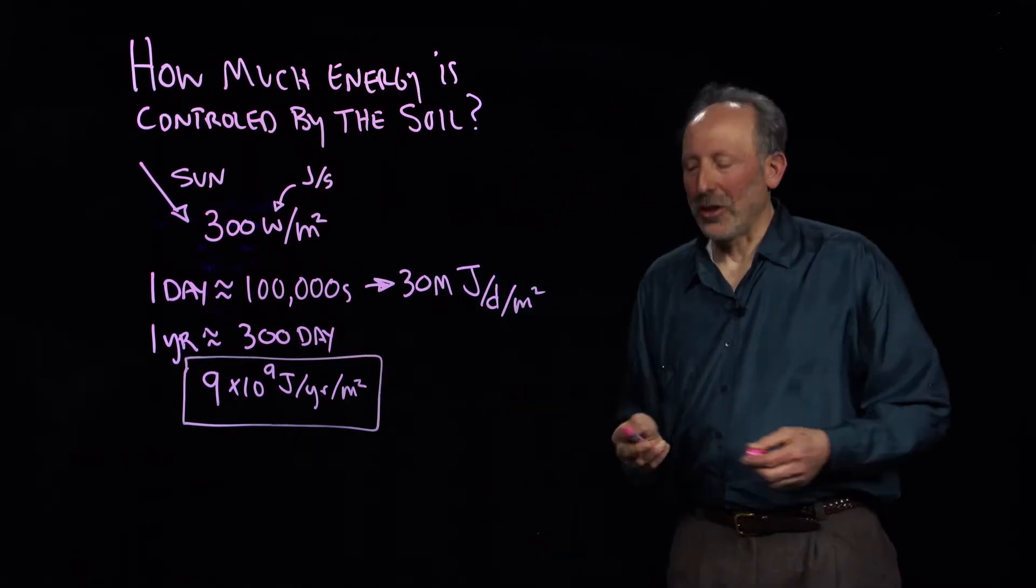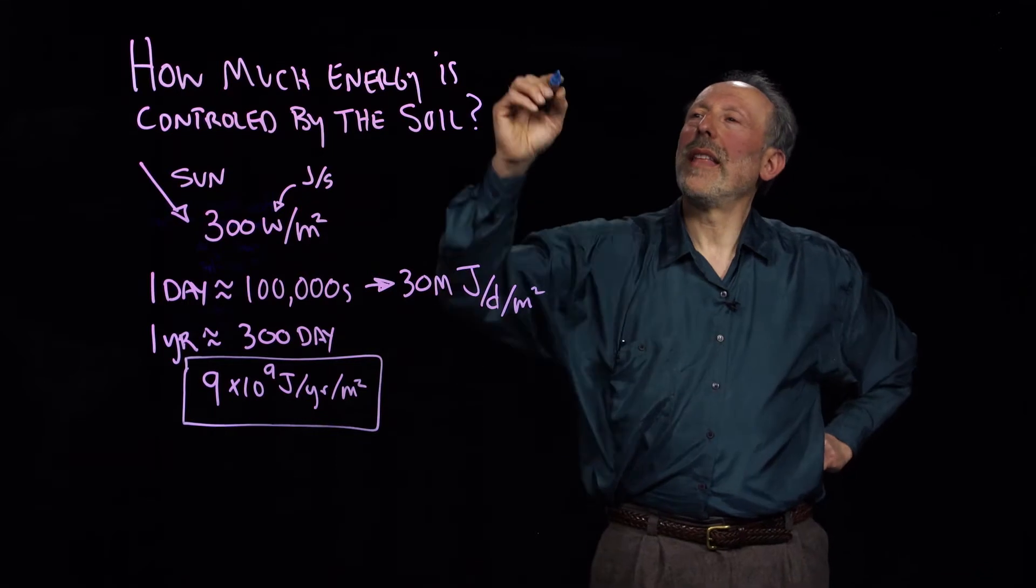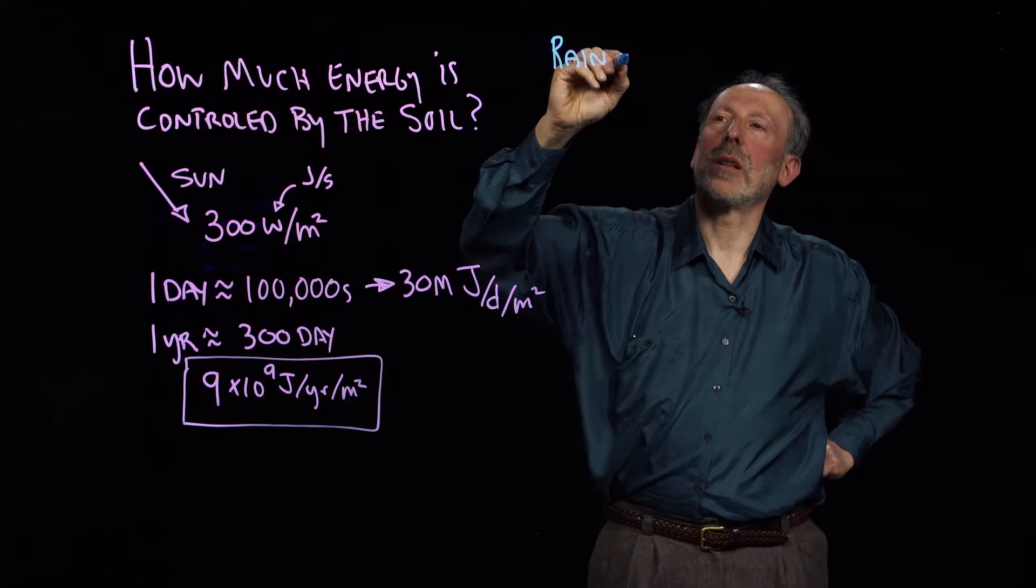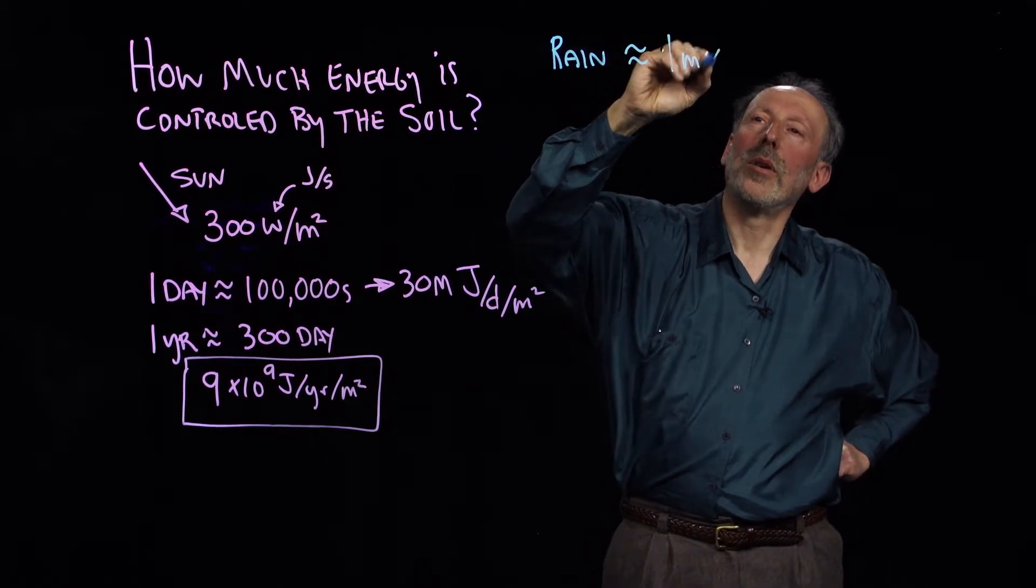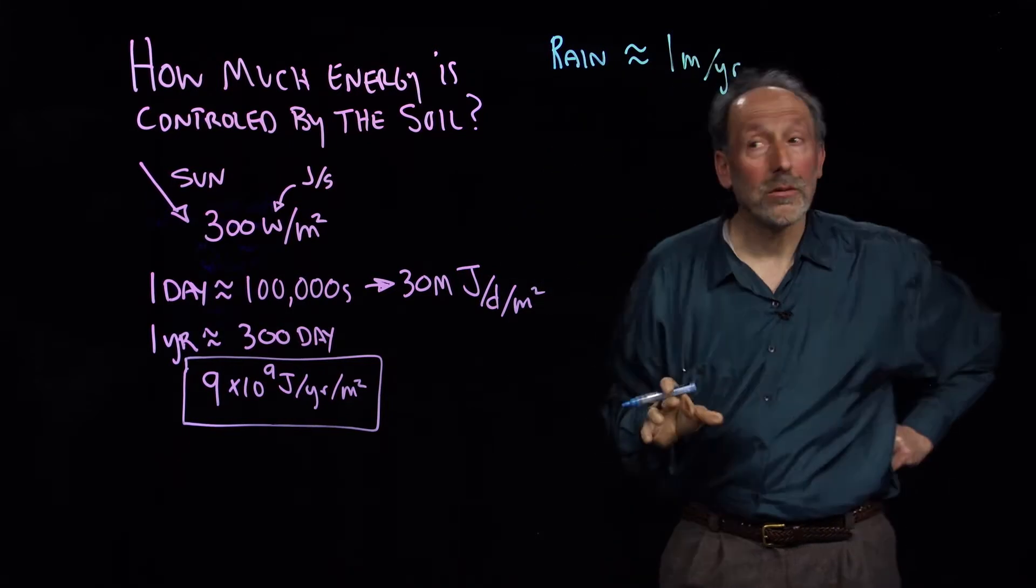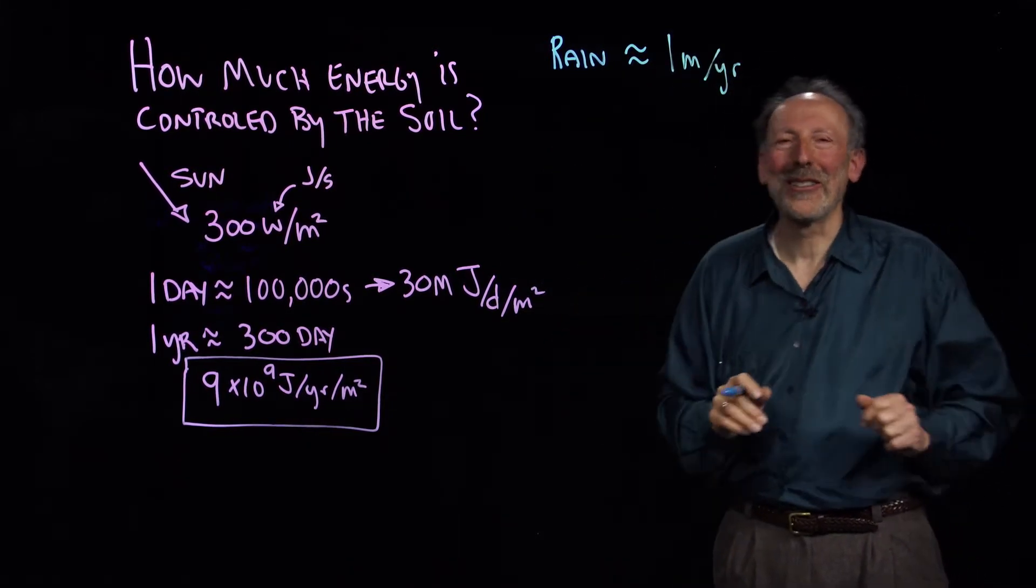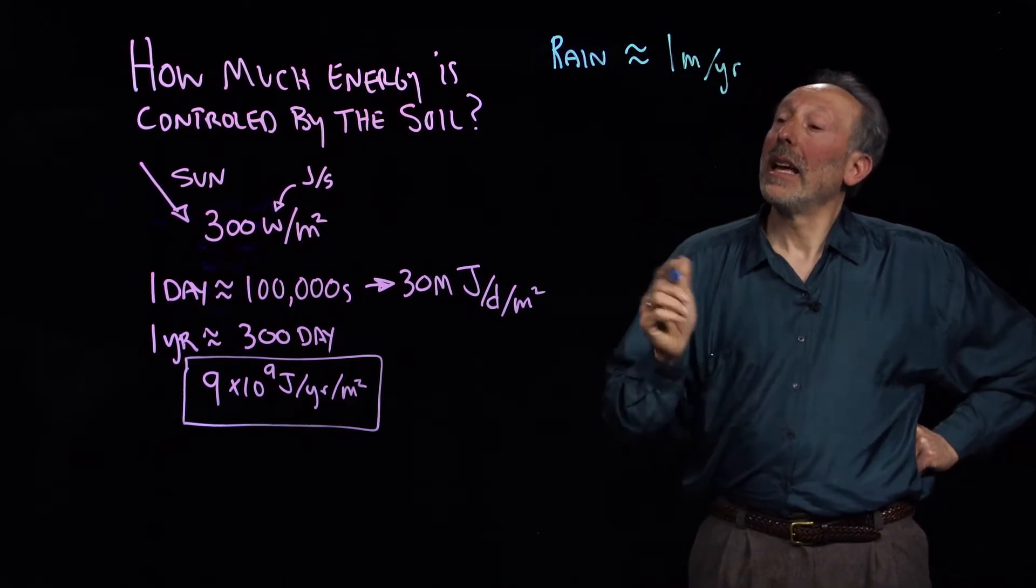Now what do we compare that to then? Well, we know that the rainfall, or precipitation more generally, is about equal to one meter per year. And that's true remarkably over much of the earth. Obviously there are some dry areas, obviously there are some wetter areas, but for much of the earth it's about a meter per year.